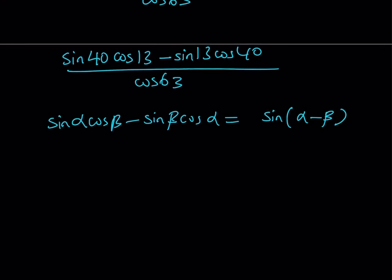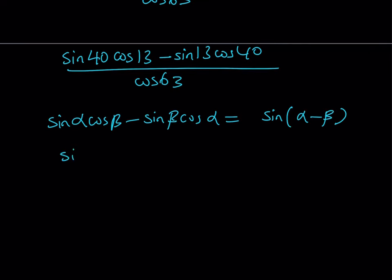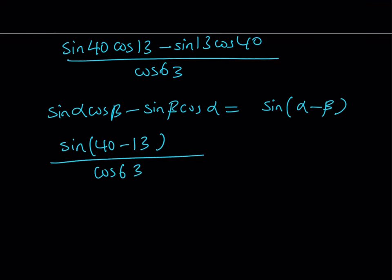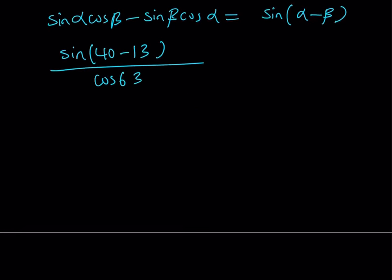So we can write the numerator as sine of 40 minus 13. And then let's go ahead and divide it by the denominator. And once you simplify this you're going to get sine of 27 divided by cosine of 63 degrees.